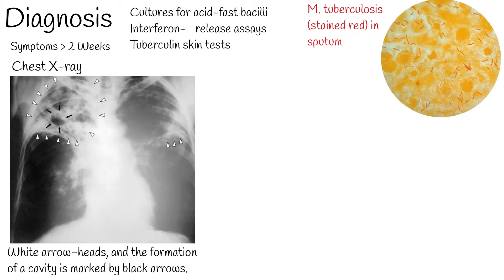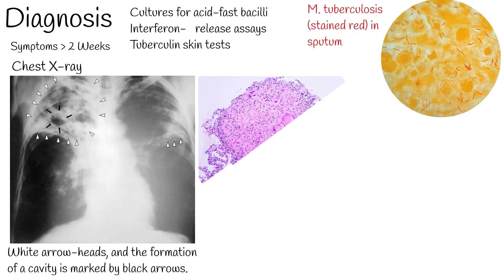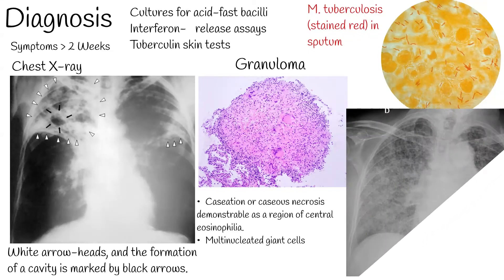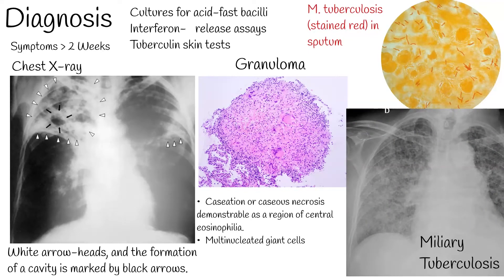The granuloma is the diagnostic histopathological hallmark of tuberculosis. The defining features of the granuloma of tuberculosis are caseation or caseous necrosis, demonstrable as a region of central eosinophilia, and multinucleated giant cells. Secondary tuberculosis differs in clinical presentation from the primary progressive disease. In secondary disease, the tissue reaction and hypersensitivity are more severe, and patients usually form cavities in the upper portion of the lungs. Pulmonary or systemic dissemination of the tubercles may be seen in active disease, and this may manifest as miliary tuberculosis, characterized by millet-shaped lesions on chest x-ray.